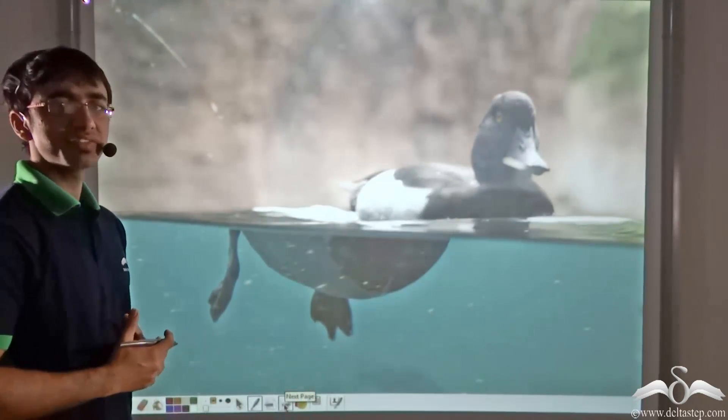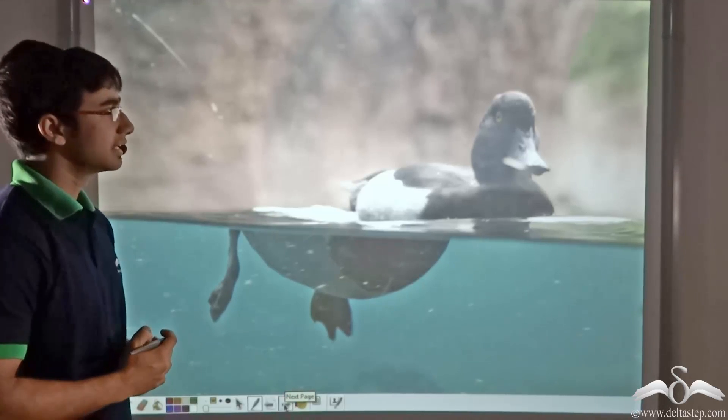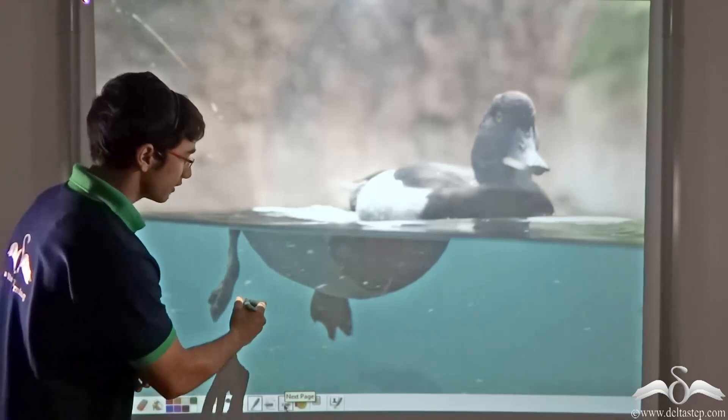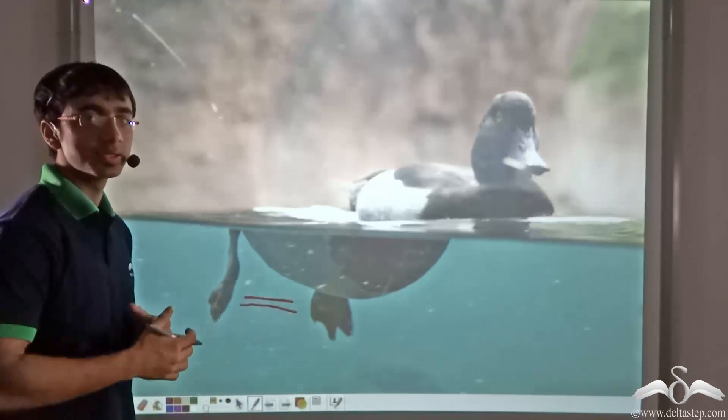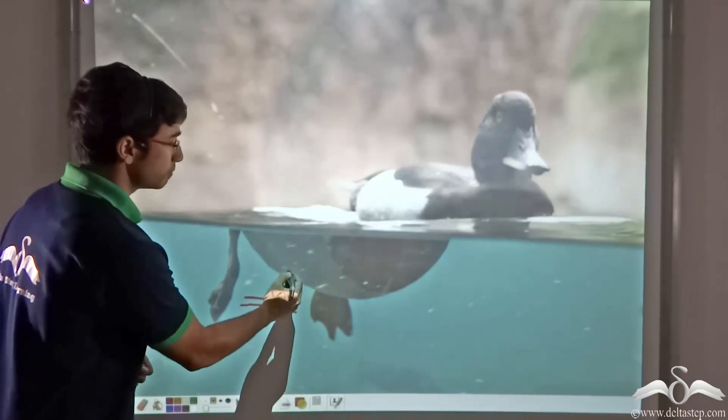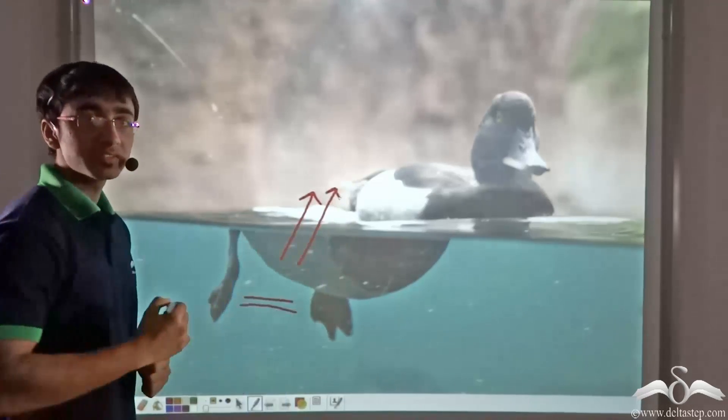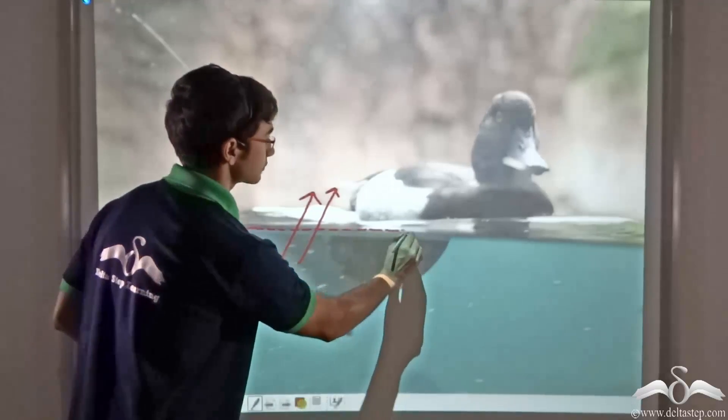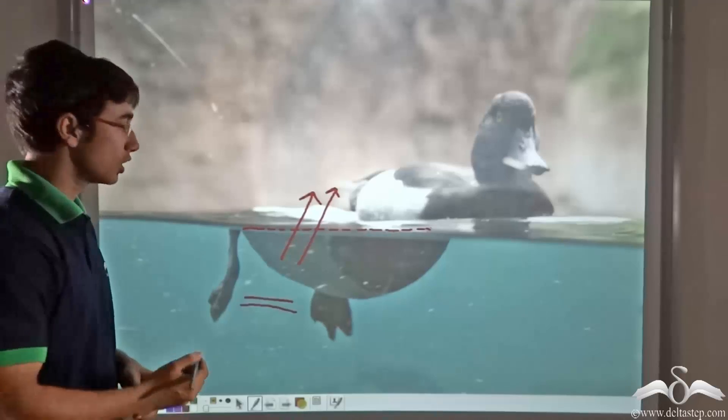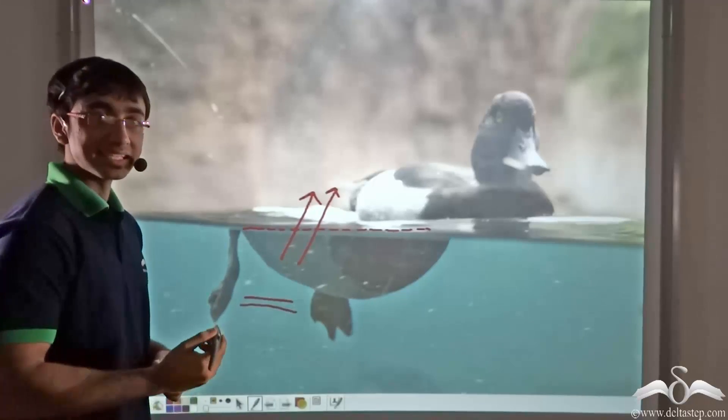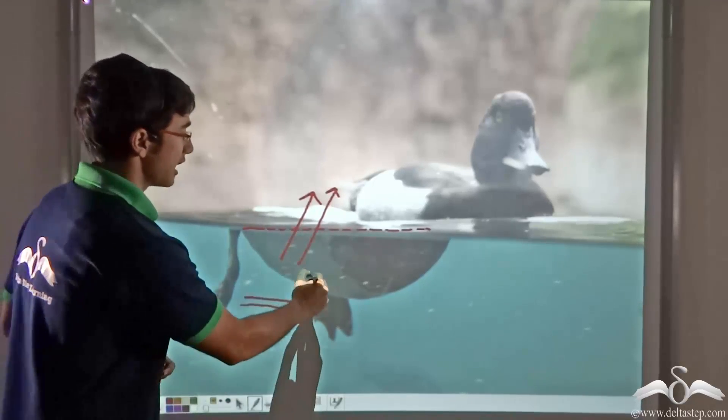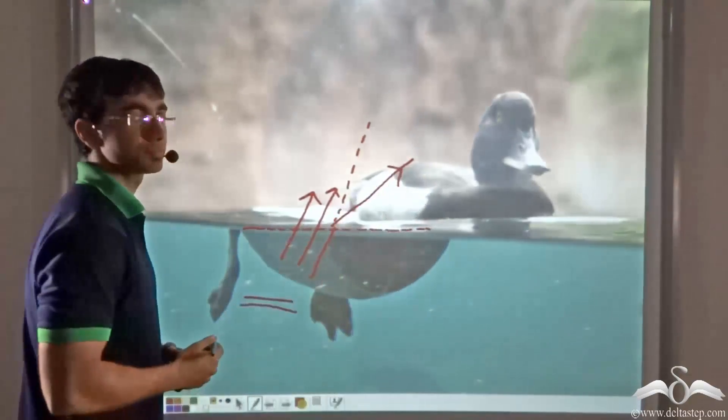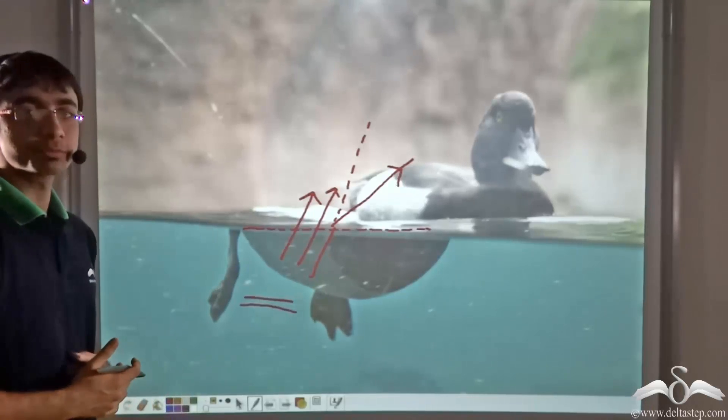So let us try to demystify the case of the magician and the duck. Here, the bottom part of the duck, as you can see, is inside the water. So when the light rays from the bottom part are coming to the observer's eyes, they are first hitting the water-air interface. Now since there is a change in medium on going from water to air, the light rays that are coming out are not traveling straight. Instead, they are getting bent. It is due to this that the duck appears broken.